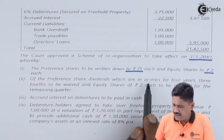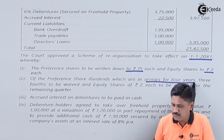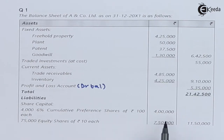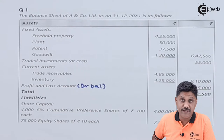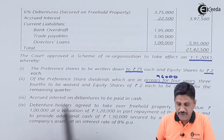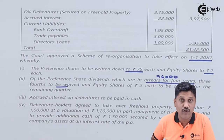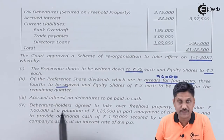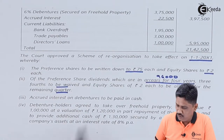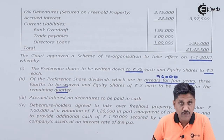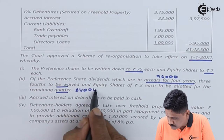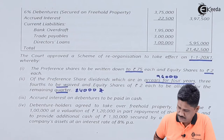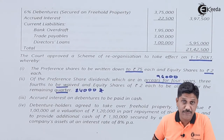Preference dividends are in arrears for 4 years. Preference capital is Rs.4 lakhs; at 6% that is Rs.24,000 per year, so total arrears are Rs.96,000. Three-fourths of this is waived — being an unrecorded liability, we will not pass any entry for that. For the remaining one-fourth (Rs.24,000), equity shares of Rs.2 each are allotted, meaning 12,000 shares of Rs.2 each are issued to settle this liability.